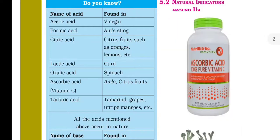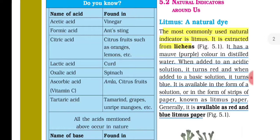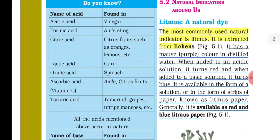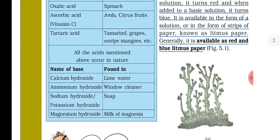Tartaric acid is found in tamarind and mangoes. All the acids mentioned above occur naturally — they are found in nature and are called natural acids.